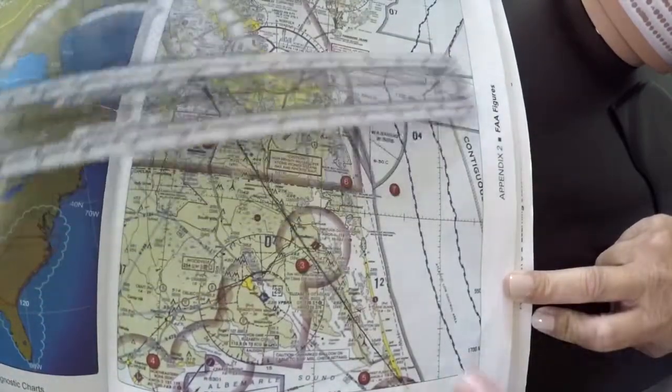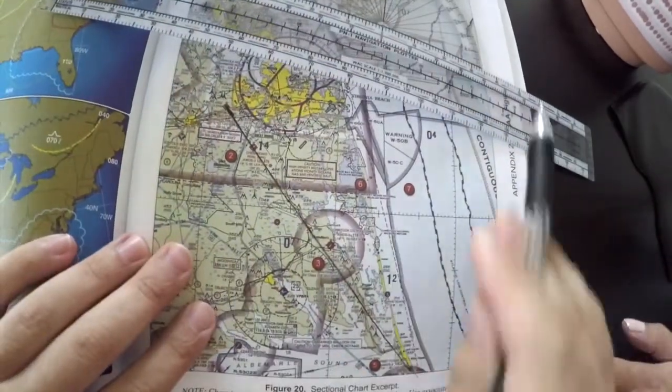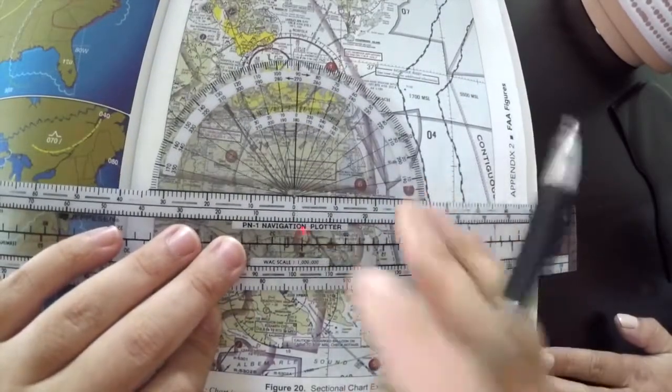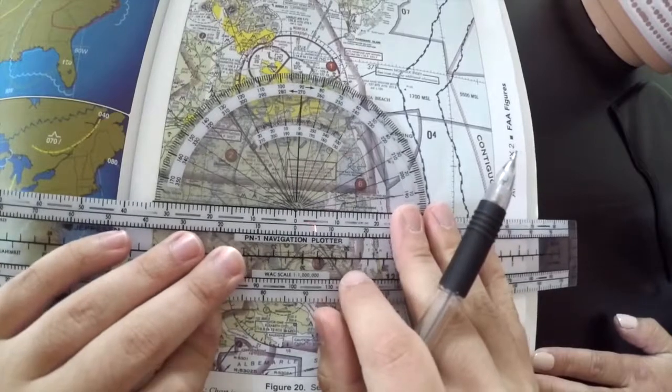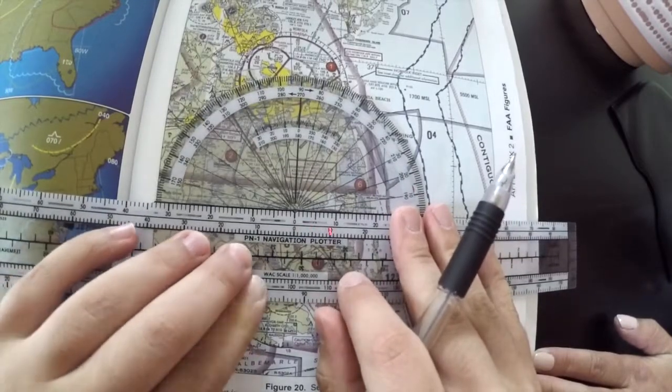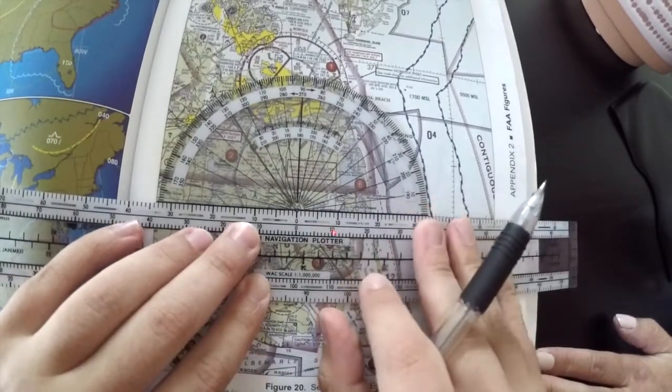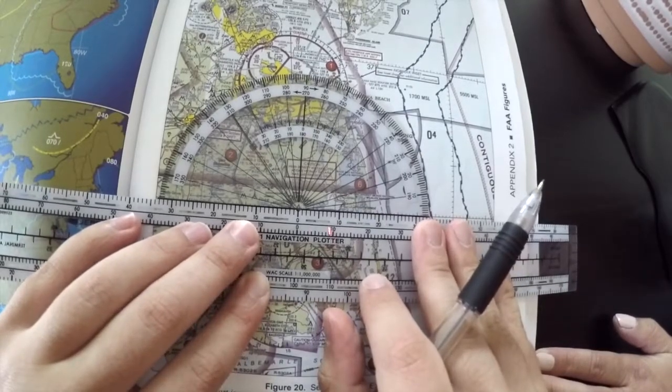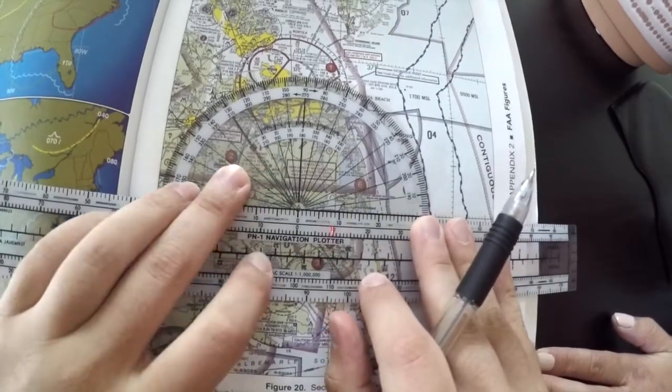Now the way I like to use it is I use the horizontal grid lines, and I just put this little circle here right on the point where my course intersects with one of those horizontal grid lines. Make sure the plotter is nice and aligned.